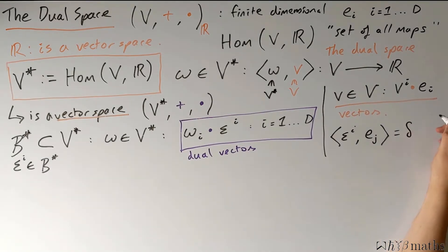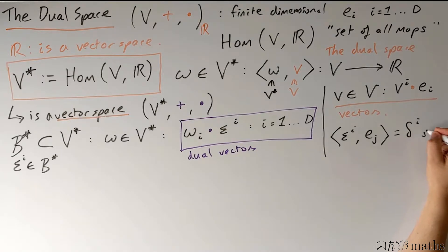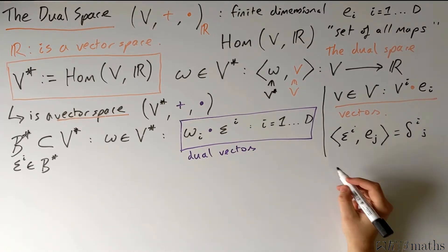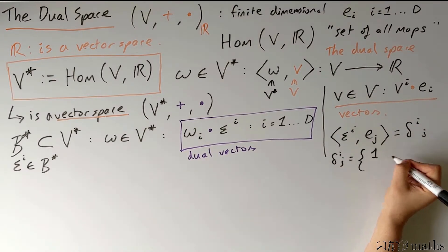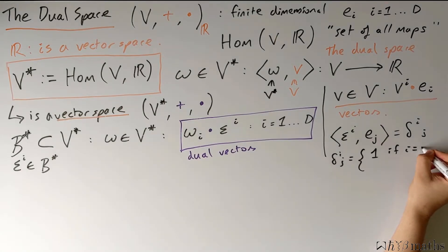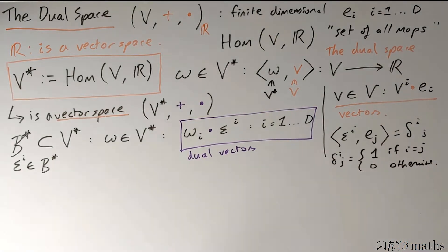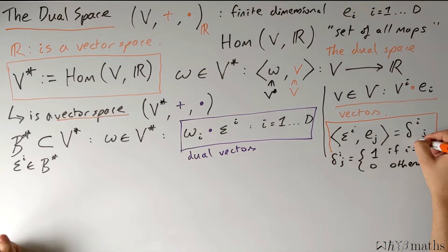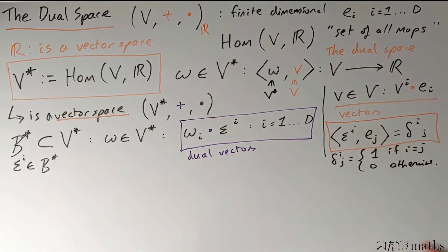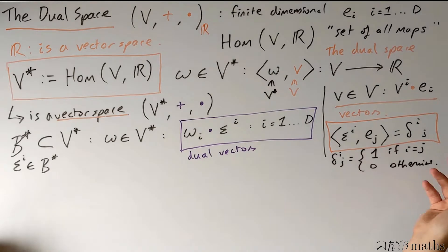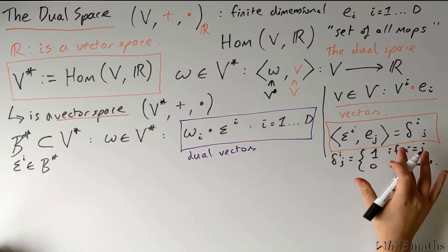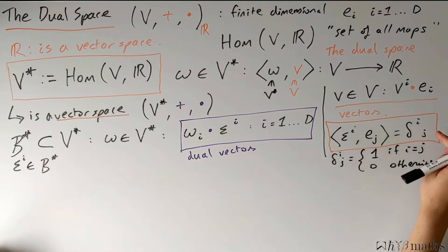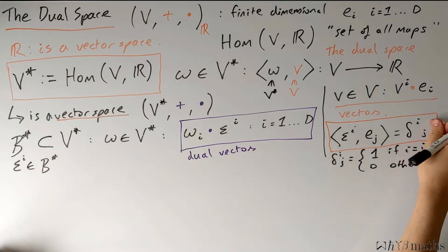I'm going to define that this is equal to the Kronecker delta, where the Kronecker delta is defined to be 1 if i is equal to j and 0 otherwise. This choice didn't have to be this simple — in general we could write down anything for this relation. We'll see later that the two bases can be related in a more non-trivial way using something called the metric, but for now we'll stick with this simple choice of the Kronecker delta.